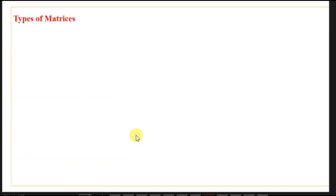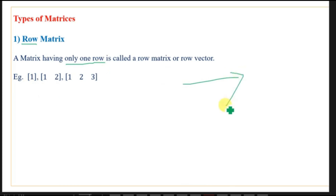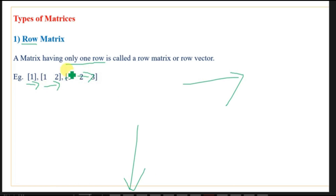Now we discuss the various types of matrices. The first type is the row matrix. The name itself tells us what it means — a row matrix is a matrix which contains only one row, and it can contain any number of columns. We count rows as horizontal lines — there is only one row in each of these examples. So a matrix having only one row is known as a row matrix.